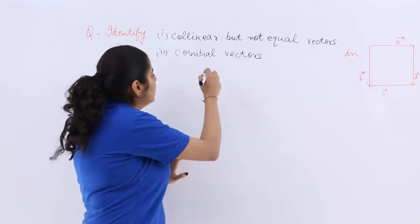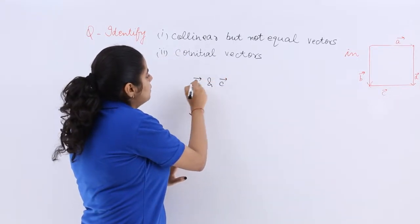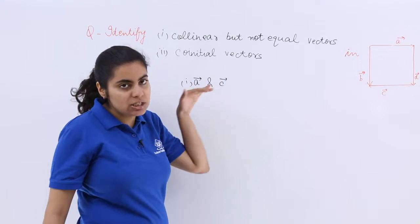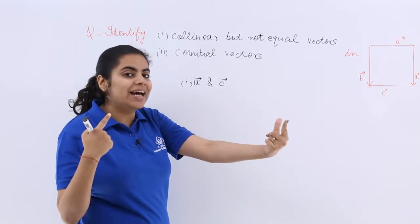So we can say A and C. So the first part is A vector and C vector because these are collinear also but they are not equal since the direction is not same.